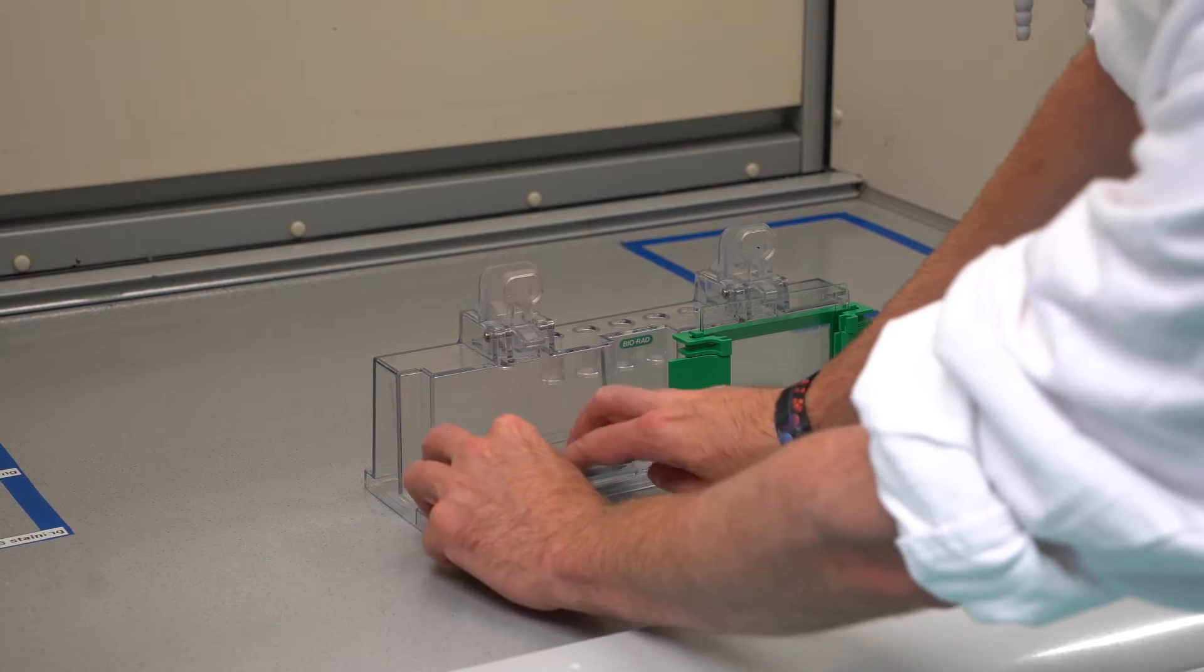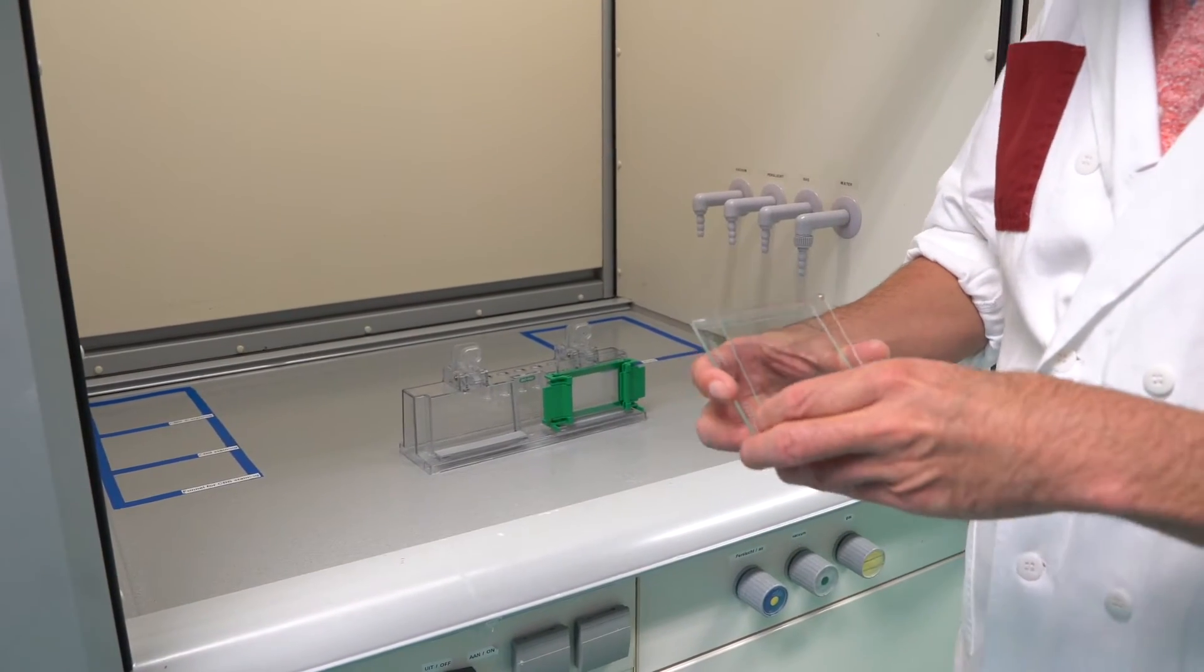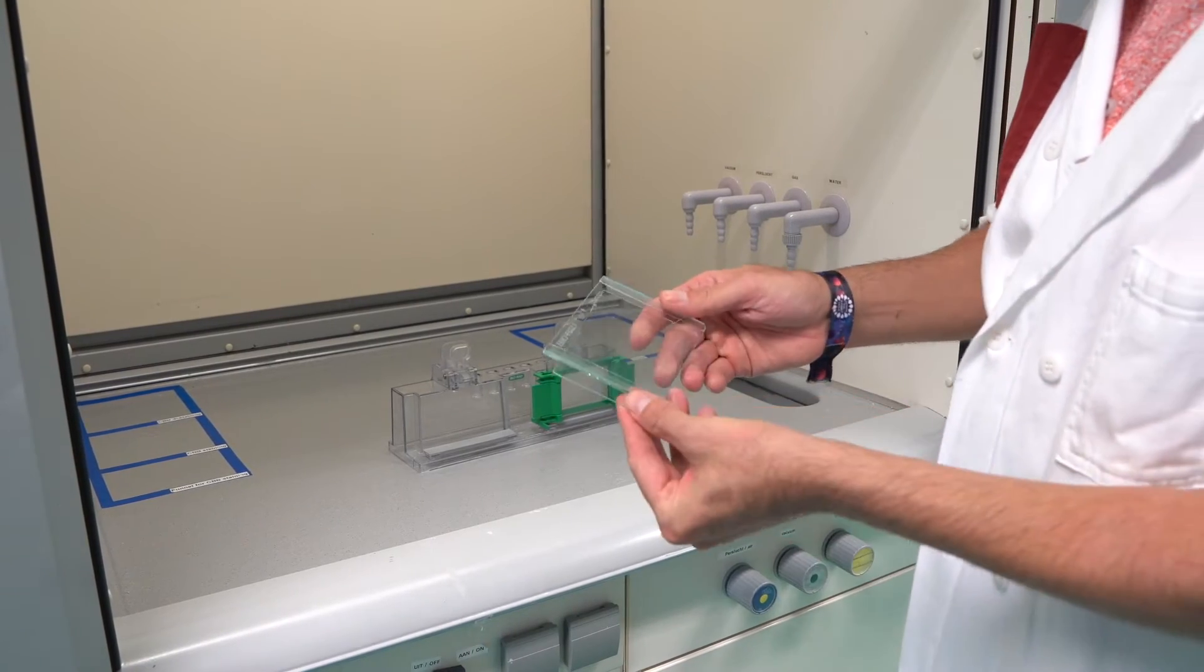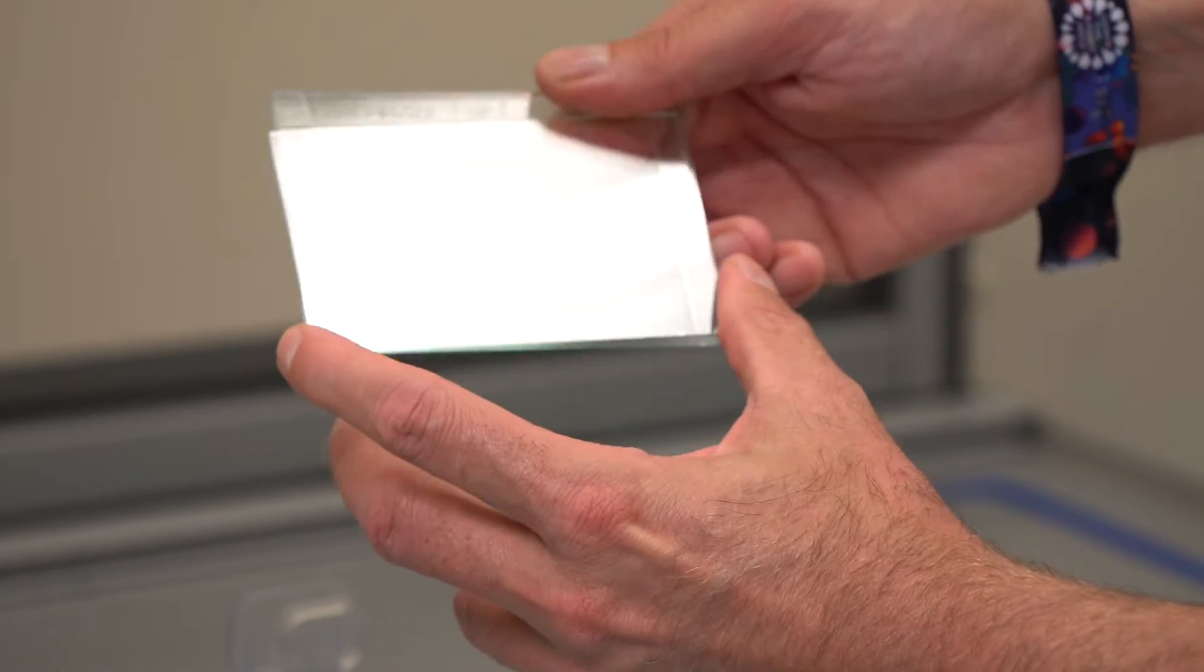Place the rubber on the casting stand. Two glass plates are required for pouring a gel: one spacer and a short plate. The spacer plate is thicker and has two elevations on the sides, the spacers.